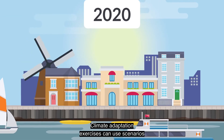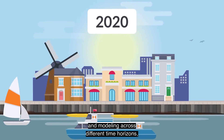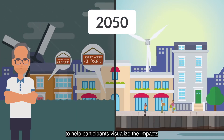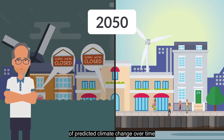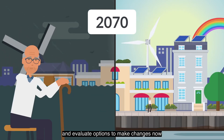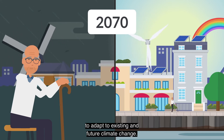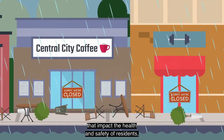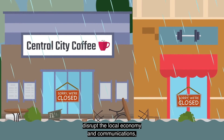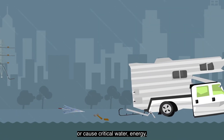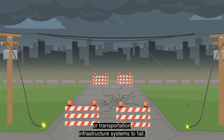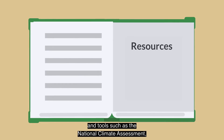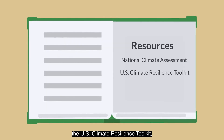Climate adaptation exercises can use scenarios and modeling across different time horizons, such as 20, 30, and 50 years in the future, to help participants visualize the impacts of predicted climate change over time and evaluate options to make changes now to adapt to existing and future climate change. Scenarios can reflect climate risks that impact the health and safety of residents, disrupt the local economy and communications, negatively affect the environment, or cause critical water, energy, or transportation infrastructure systems to fail. The ERG includes links to resources and tools such as the National Climate Assessment, the U.S. Climate Resilience Toolkit, and the National Risk Index that provide information and data to build realistic climate-based scenarios.